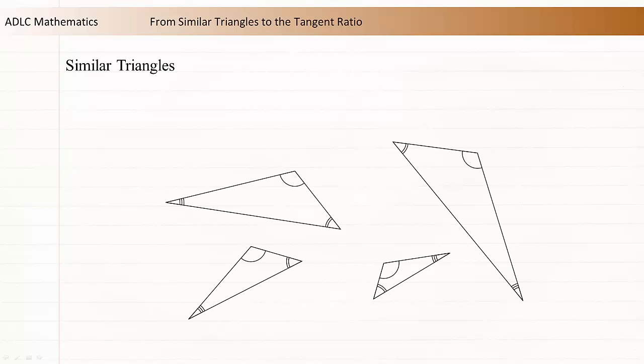First let's review what similar means. Triangles are similar if they are the same shape. They don't need to be the same size or the same orientation, but they must include the same angles.